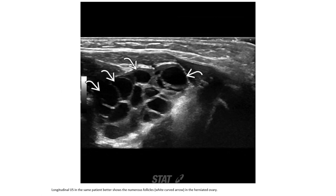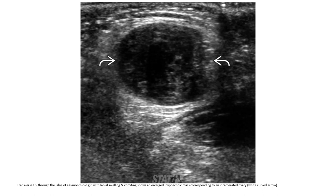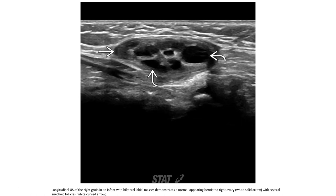Ultrasound in the same patient better demonstrates the numerous follicles in the herniated ovary. Another ultrasound through the labia of a six-month-old with labial swelling and vomiting shows a large hypoechoic mass corresponding to an incarcerated ovary. Ultrasound of the right groin in an infant with bilateral labial enlargement demonstrates a non-markering herniated ovary with several anechoic follicles.